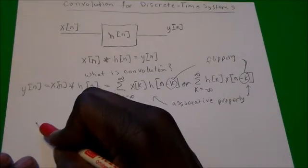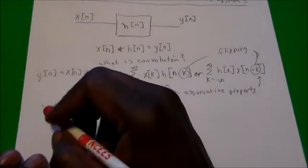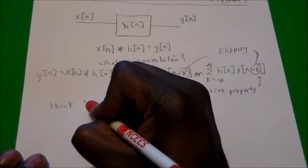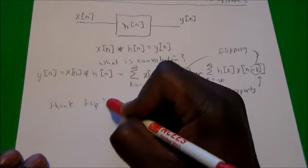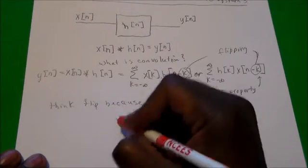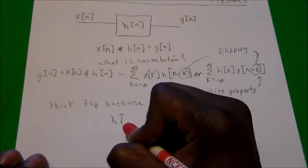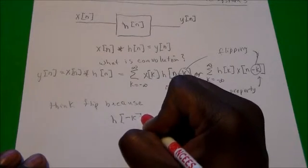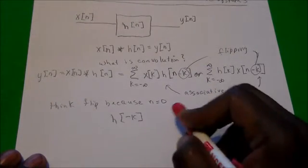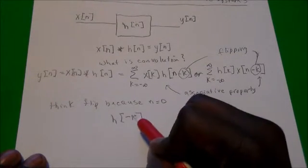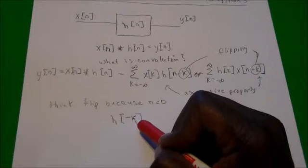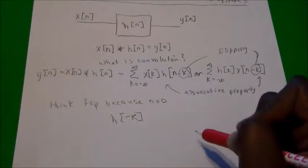So why is that called a flip? When I say flip, think of h of negative k — that's because we're saying n equals zero, so the signal has been flipped in time because of the negative sign in front of k.